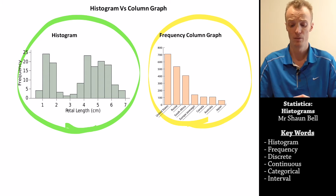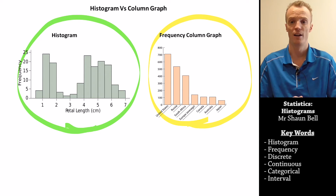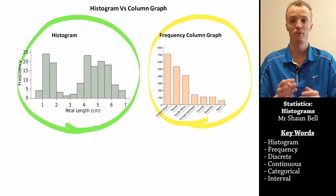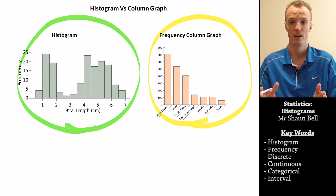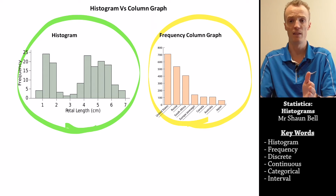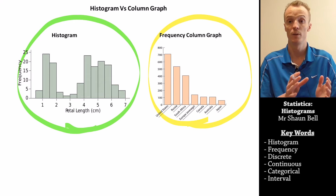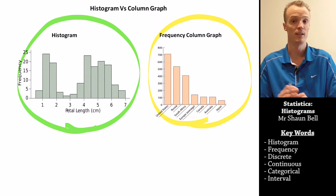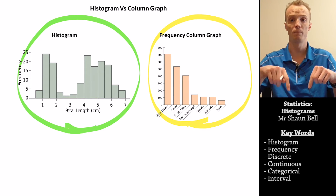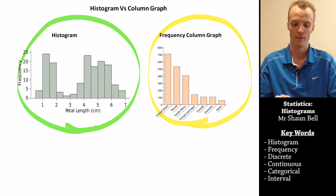If we look at the column graph, you'll notice that we're representing discrete data. However, with the histogram, we're representing continuous data — data that has everything in between. If you want to review what the difference between discrete and continuous data is, I've left a link below.